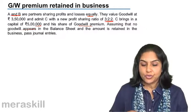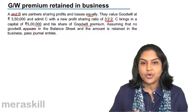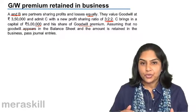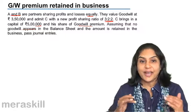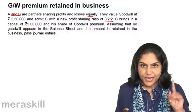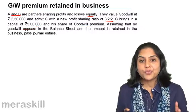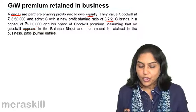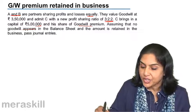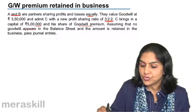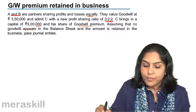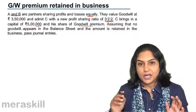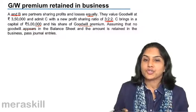First, we need to find the sacrificing ratio of A and B. Sacrificing ratio equals old ratio minus new ratio. Next, we need to find the amount of goodwill premium C is supposed to bring. His share is 2/7 — since the new ratio is 3:2:2, the total is 7, and C's share is 2/7 of 3,50,000.